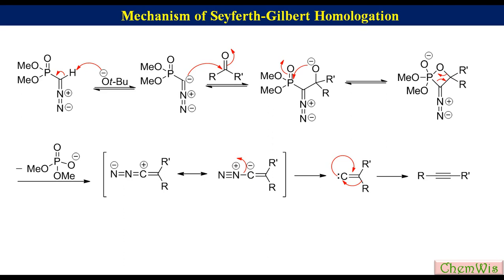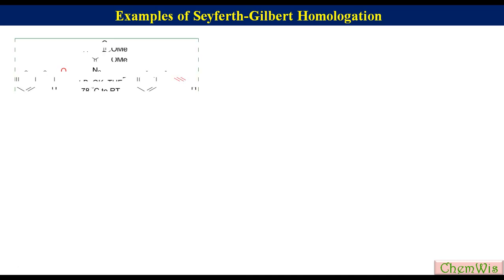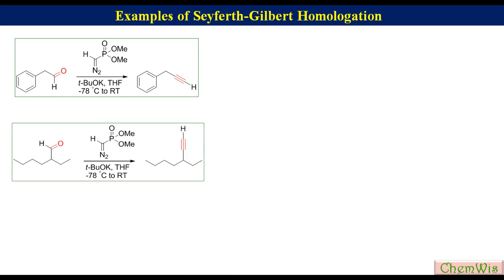This vinylidene carbene undergoes a 1,2-migration of one of the two substituents to produce the substituted alkyne product.